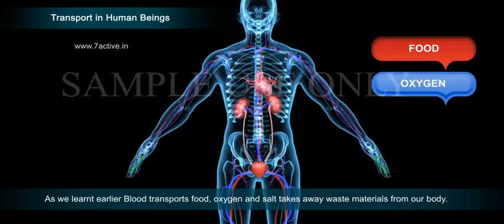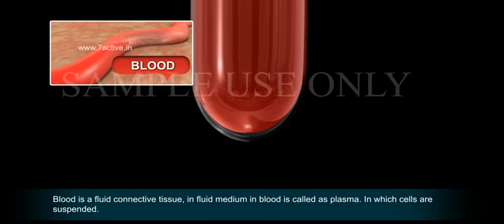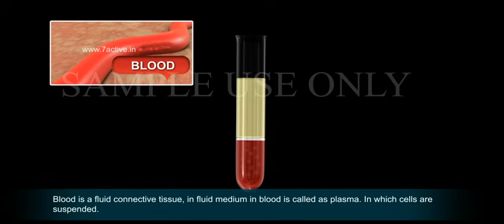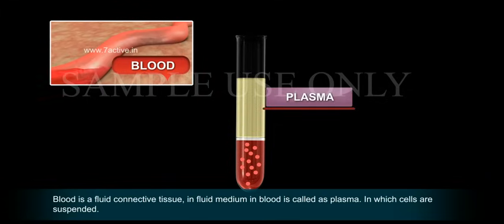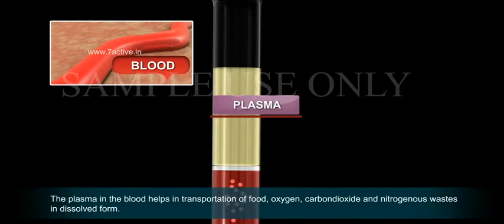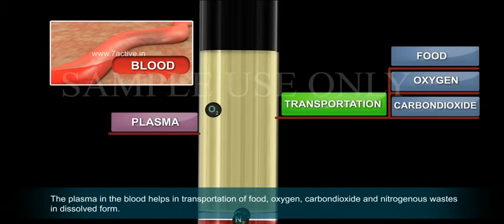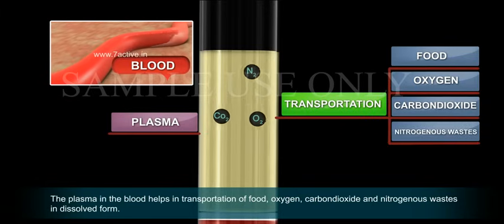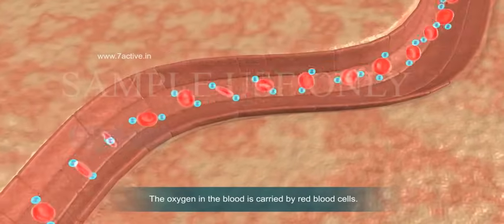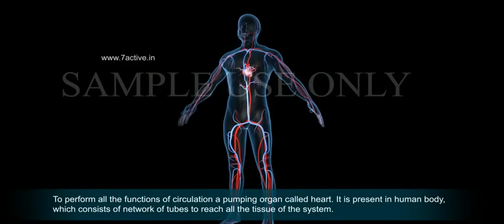Blood takes away waste materials from our body. Blood is a fluid connective tissue. The fluid medium in blood is called plasma, in which cells are suspended. The plasma in the blood helps in transportation of food, oxygen, carbon dioxide and nitrogenous wastes in dissolved form.